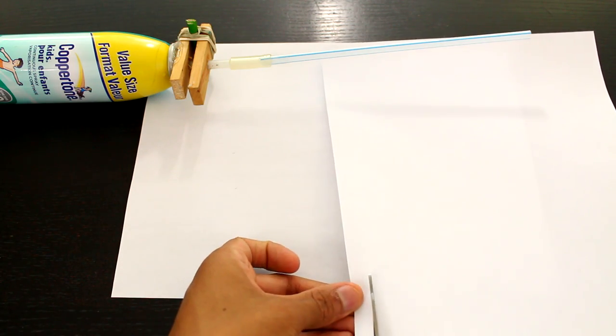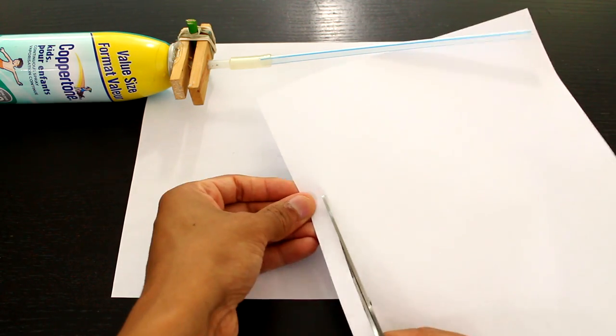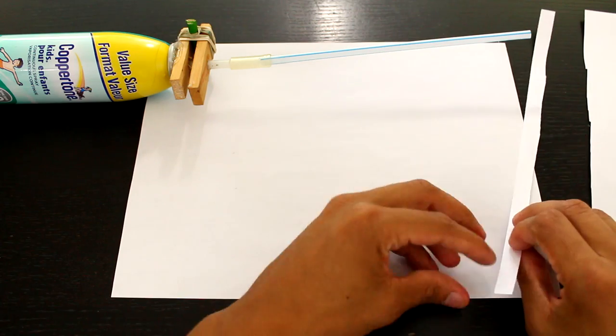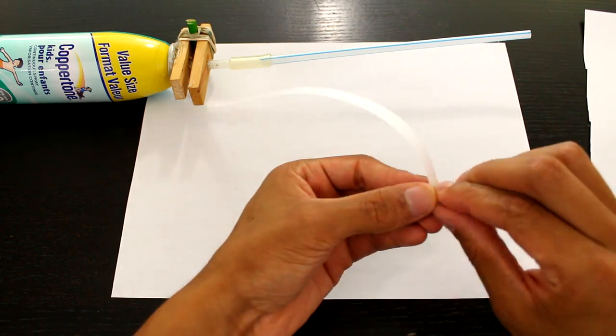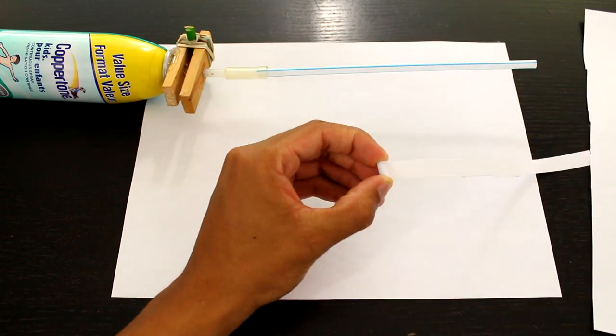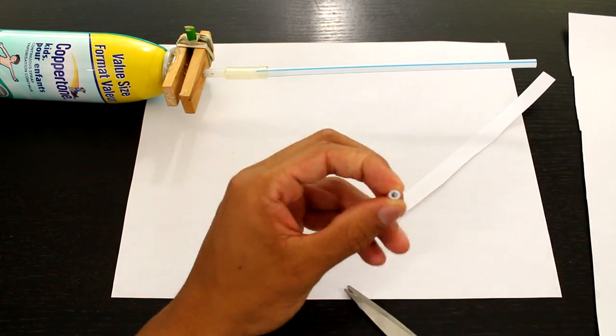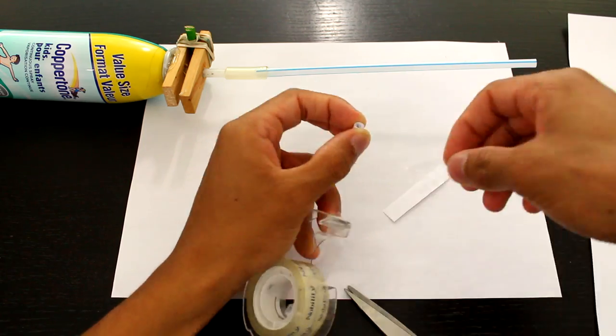Now let's get to making the bullets. To make the bullets I'm going to cut out a thin strip of paper and I'm going to roll it up until it's about the size of the straw in the barrel. Then I'm going to cover it in tape so it slides easily.